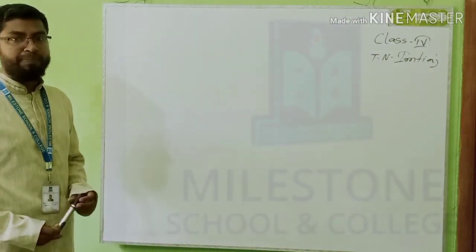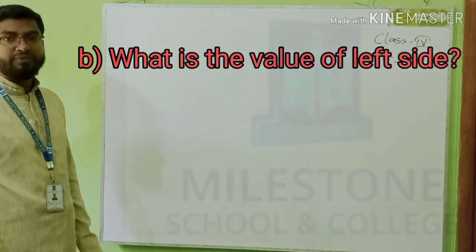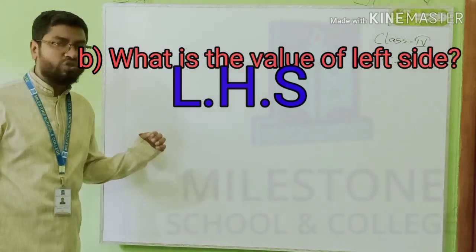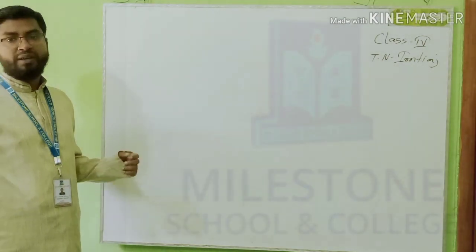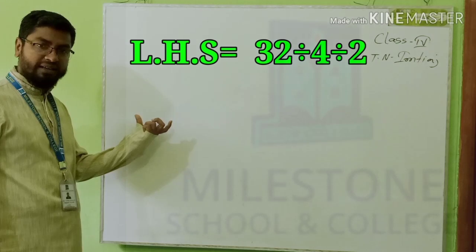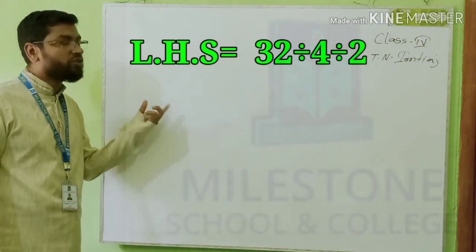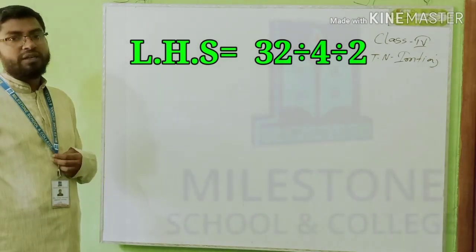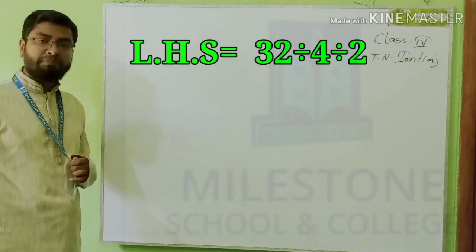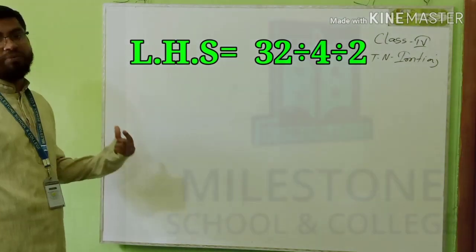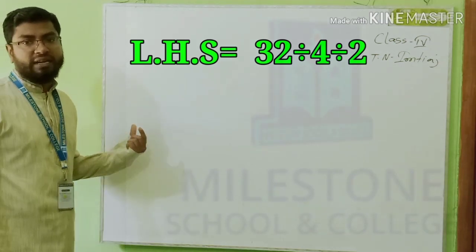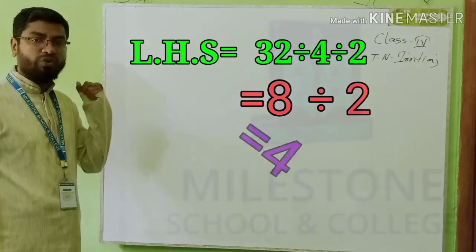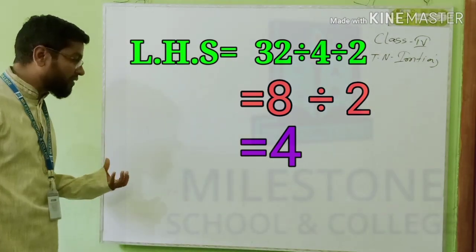Now B number question: what is the value of the left side? For the left side, we can say LHS — left hand side. Left hand side equals 32 divided by 4 divided by 2. Now there are two operations: division and division. Both are the same operation, but according to the rules, we have to do the first operation first. 32 divided by 4 equals 8, then divided by 2 equals 4. So the value of the left side is 4.